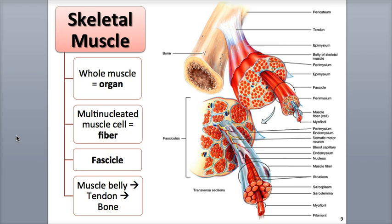Skeletal muscle fibers are multinucleated, having many nuclei, with most fibers having over 100 nuclei each. This is because, during their development, they are the products of the fusion of over 100 cells in the embryonic mesoderm called myoblasts. After this merging together into one single cell, the muscle fiber can no longer divide.